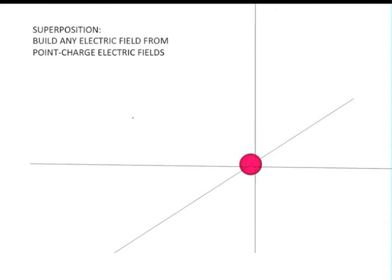Superposition means you can calculate the electric field outside any distribution of charges by adding together the fields of those charges. You can build complicated fields of complicated distributions of charge by adding together their Coulomb fields. Here's an example of how this works.